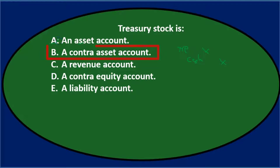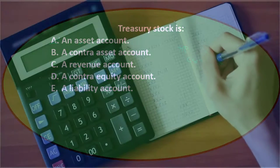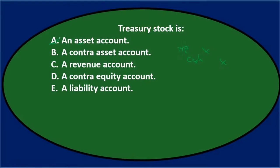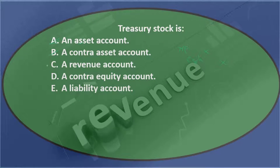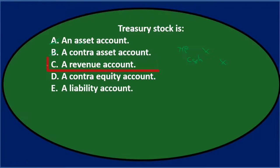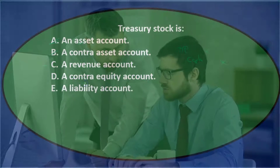So I'm going to cross out A. B says a contra asset account — a contra asset still relates to assets, like accumulated depreciation, which has a credit balance contra to the normal debit balance. But since it involves stock, we're assuming it belongs in the equity section, so we'll cross out B as well. C says a revenue account — revenue is partly in the equity section since it closes out to equity, so I'll keep that for now.